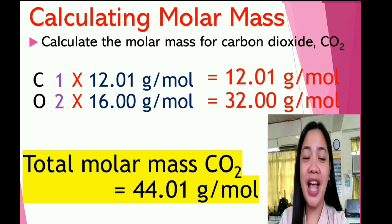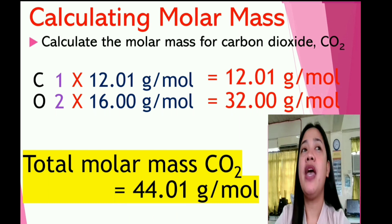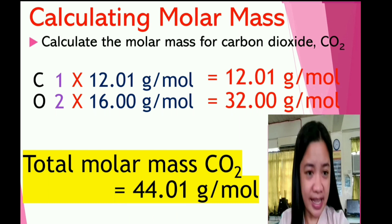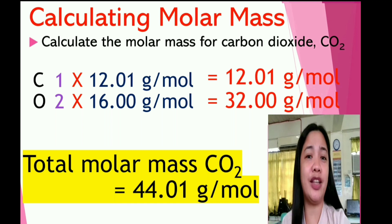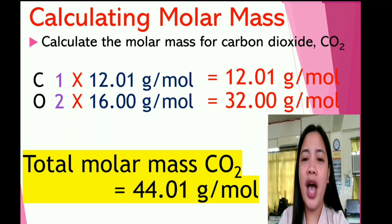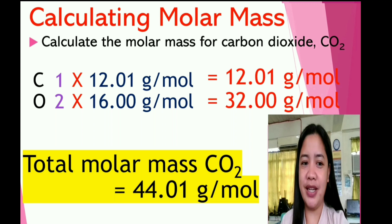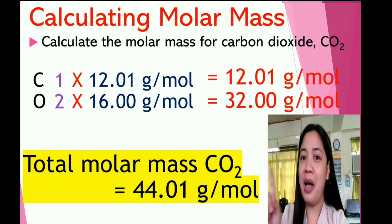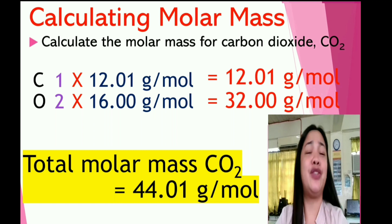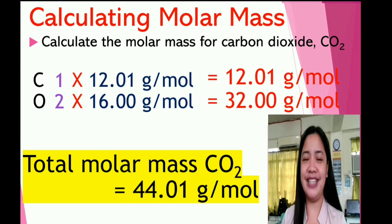Since we are done identifying the number of atoms and multiplying them by their atomic mass, now you have to get the sum of carbon and oxygen. We have 12.01 grams per mole plus 32.00 grams per mole. Therefore, the total molar mass for carbon dioxide is 44.01 grams per mole.